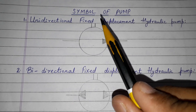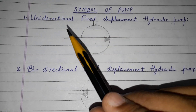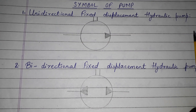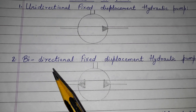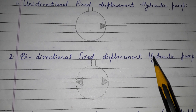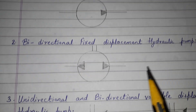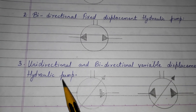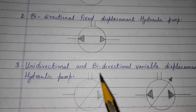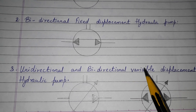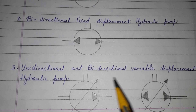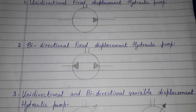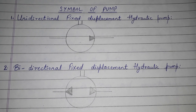So these were the symbols of the pump that we covered: unidirectional fixed displacement hydraulic pump, bidirectional fixed displacement hydraulic pump, unidirectional variable displacement hydraulic pump, and bidirectional variable displacement hydraulic pump. These were the symbols of the pump.